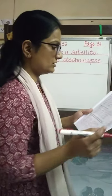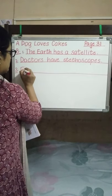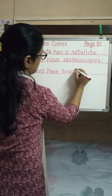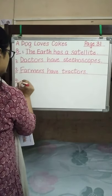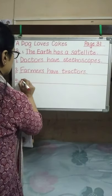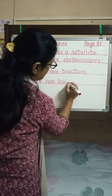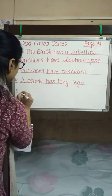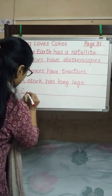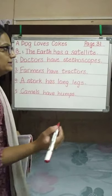Now the third part — farmers. What will go along with farmers? Farmers have tractors. The fourth part — a stork. What will go along with a stork? A stork has long legs. And the last one — camels. Camels have humps. You are all going to write these down very neatly in your book.